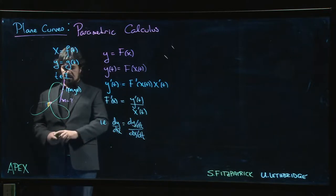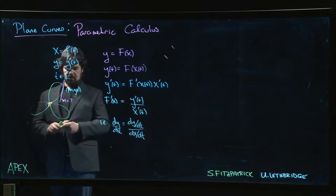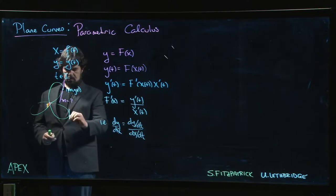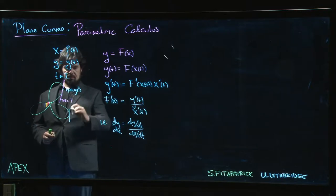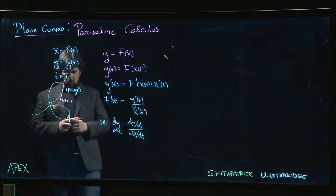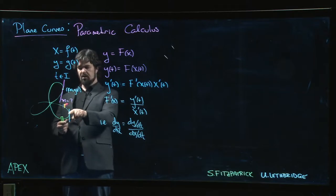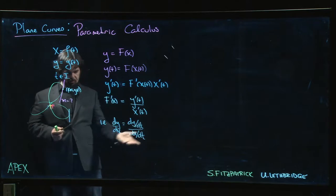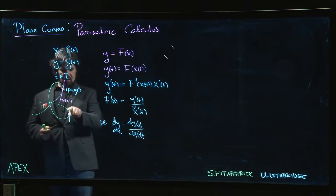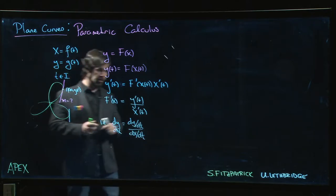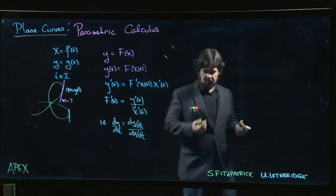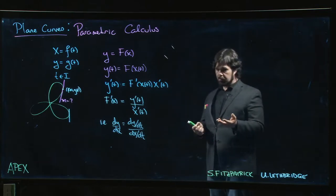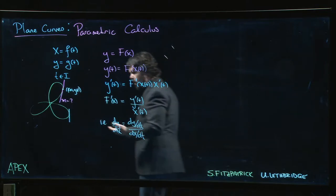I can't choose an open interval including that particular t value and say that that piece of the curve gives me y as a function of x, because any piece of the curve that's centered on that vertical tangent is going to fail the vertical line test. Okay, but what are the points with the vertical tangents?